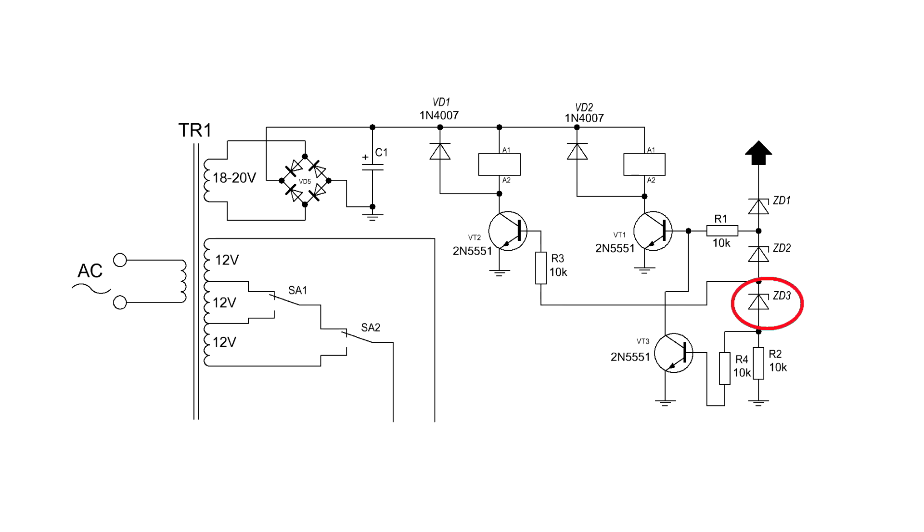An additional zener diode is needed to provide a kind of switching hysteresis, but this part can be excluded from the circuit.